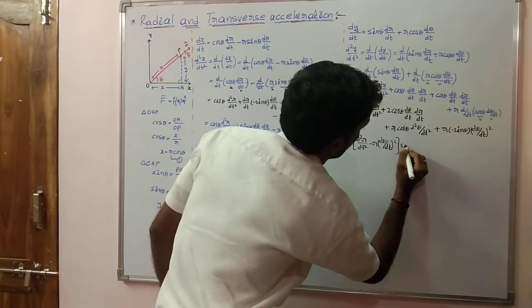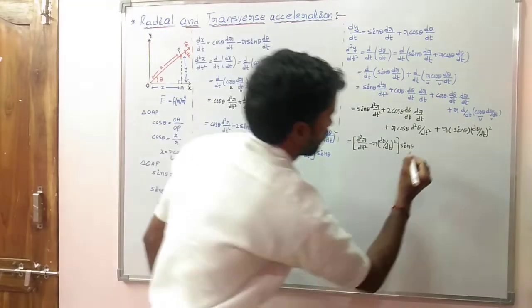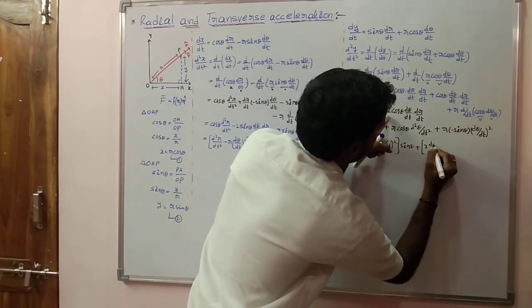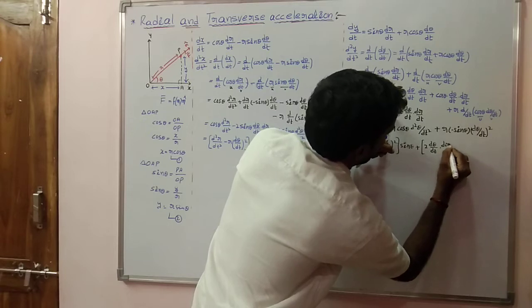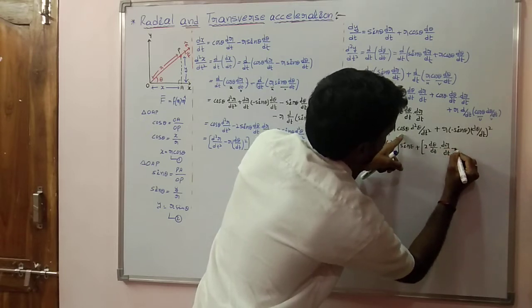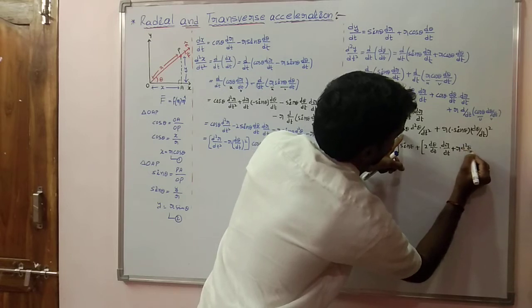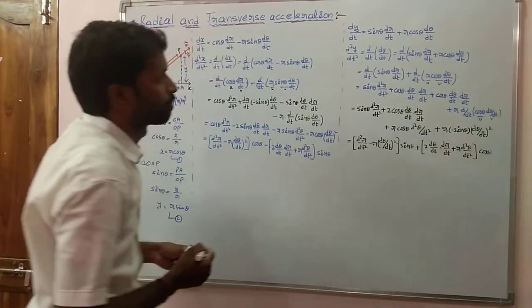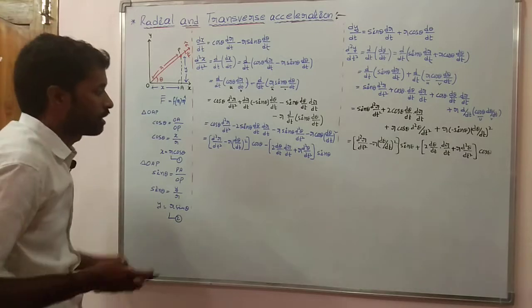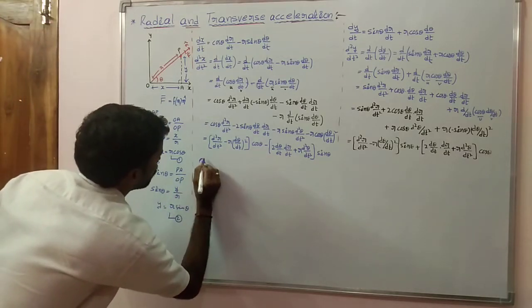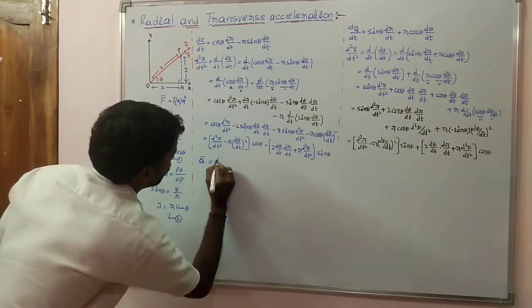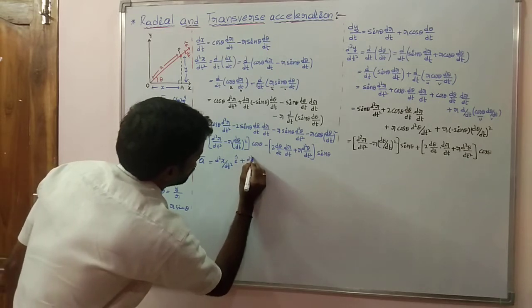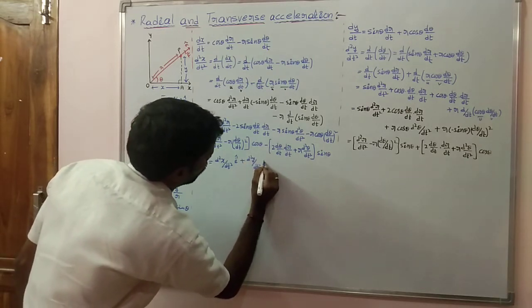Combining: sin theta plus cos theta terms give 2 into d theta/dt into dr/dt, plus r into d²theta/dt² into cos theta. This is the value of d²y/dt². From the Cartesian coordinate system, acceleration can be written as a-bar equal to d²x/dt² along the x-axis plus d²y/dt² along the y-axis.